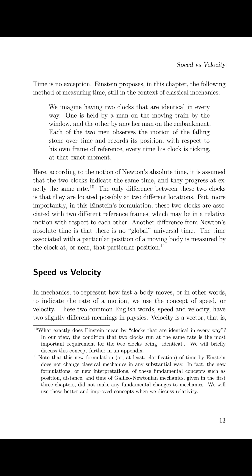Here, according to the notion of Newton's absolute time, it is assumed that the two clocks indicate the same time and they progress at exactly the same rate. The only difference between these two clocks is that they are located possibly at two different locations. But more importantly, in this Einstein's formulation, these two clocks are associated with two different reference frames, which may be in a relative motion with respect to each other. Another difference from Newton's absolute time is that there is no global universal time. The time associated with a particular position of a moving body is measured by a clock at or near that particular position.